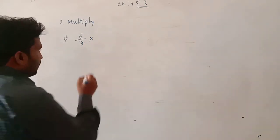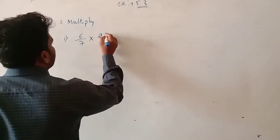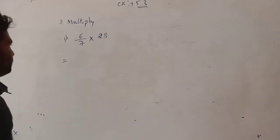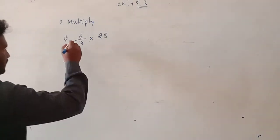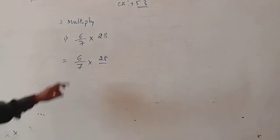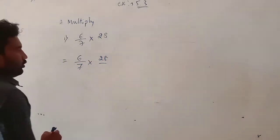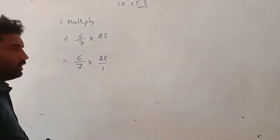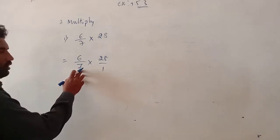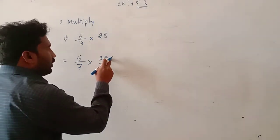That is 6 by 7 into 28. So now given two fractions, two terms. We have to write again: 6 by 7 into 28. So the first fraction is 6 by 7, and the second fraction — only the numerator is given. If no denominator is given, you should understand there is a denominator of 1. So now check whether the denominators can divide the numerators. Yes. Denominator 7 divides numerator 28.